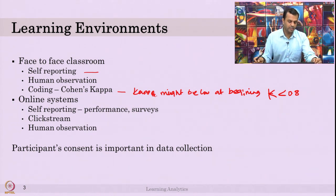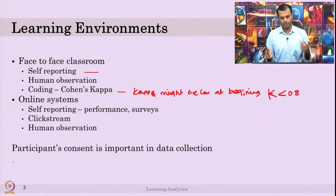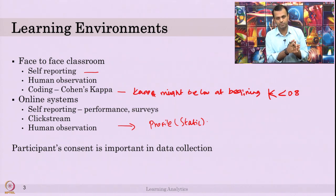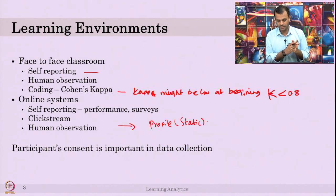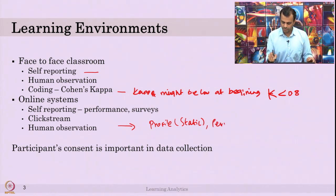In online systems, self-reporting is not just surveys — it also includes students answering questions, performance data, and clickstream data. In Intelligent Tutoring Systems specifically, there are things called a profile — static information like age, gender, year of study, prior knowledge, and parent information. Clickstream data covers all interactions. And performance data is another type. So: static profile, performance, and clickstream data together form the dataset.